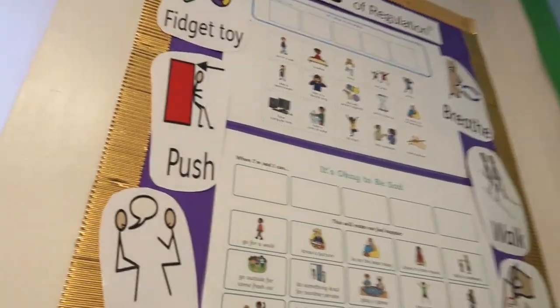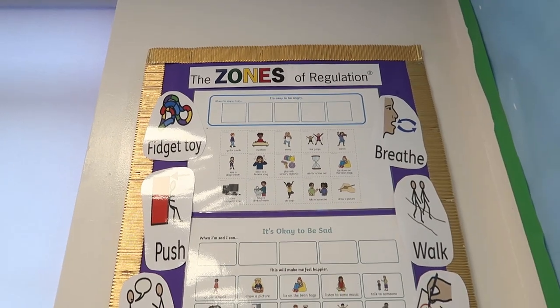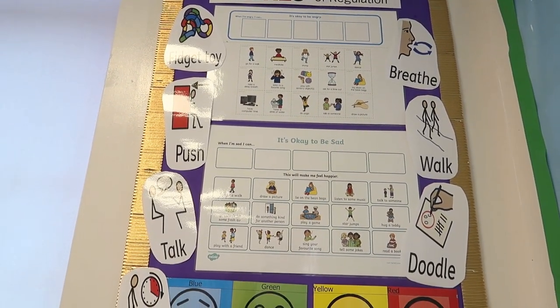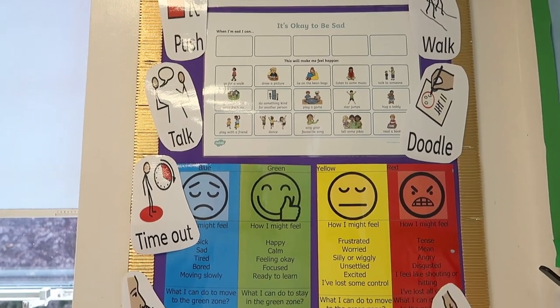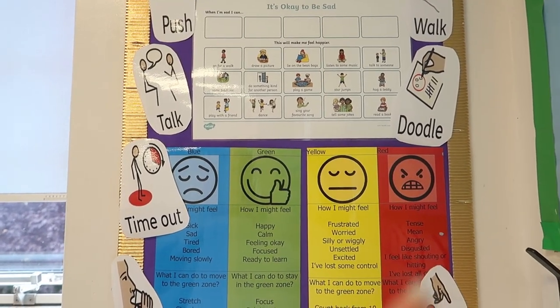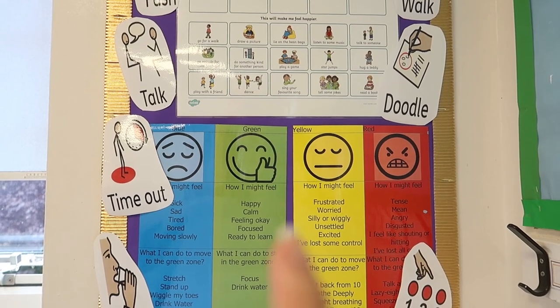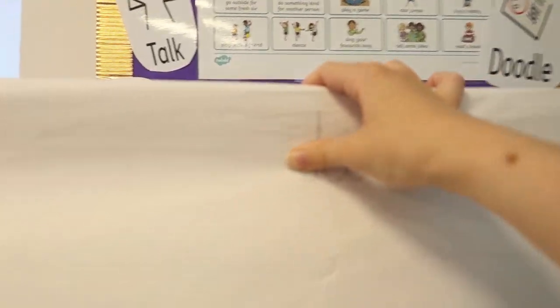We've got the Zones of Regulation here, which I thought I would show you. I haven't touched this because it's in line with the expectations of the school. It shows different ways that you can deal with emotions, what the different zones are, and different synonyms for them - so the green zone is the same as happy, being calm, focused, that kind of thing.